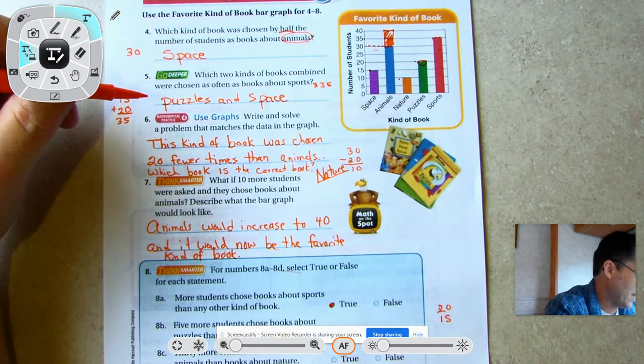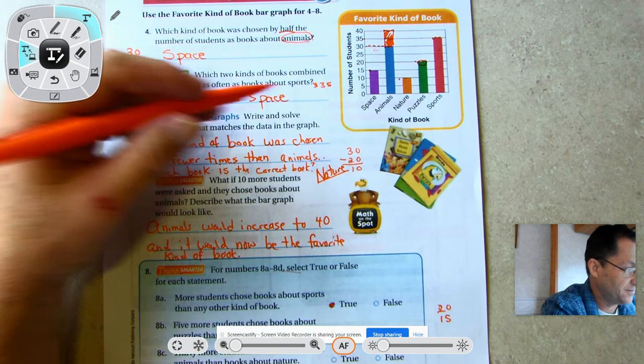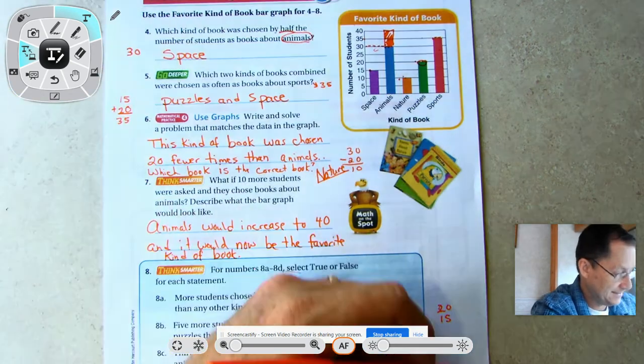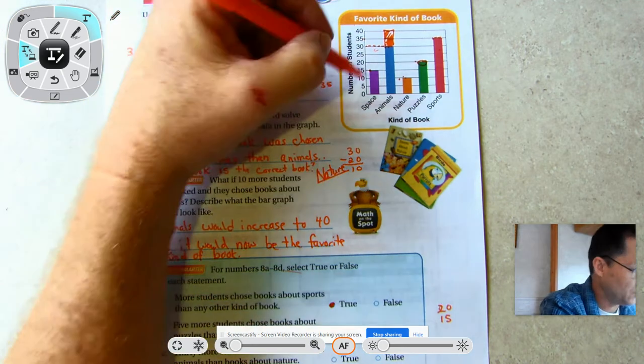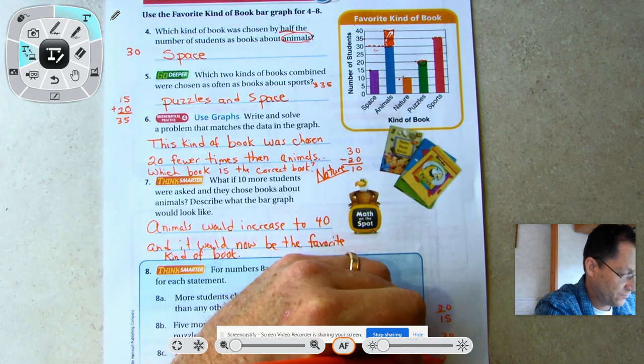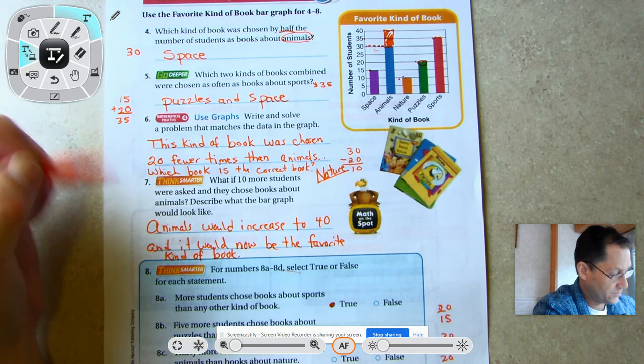30 more students chose books about animals than books about nature. Nature was 10, animals was 30. 30 take away 10 is 20, so no, false.